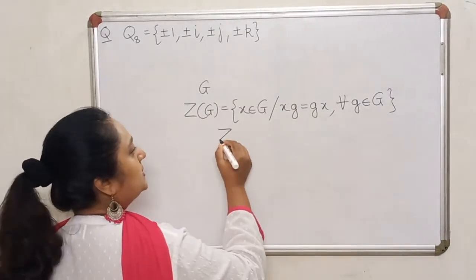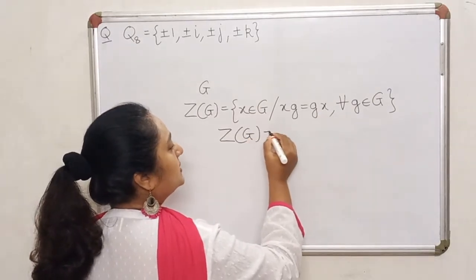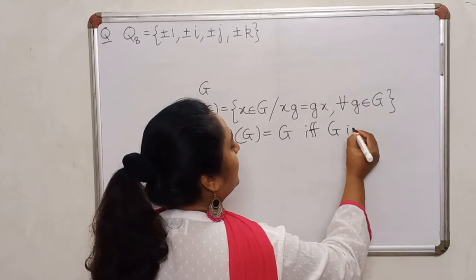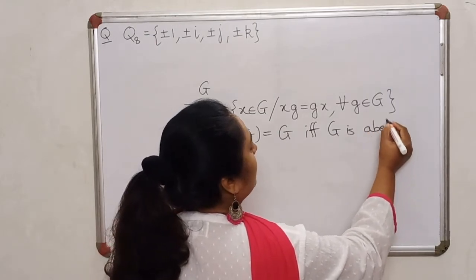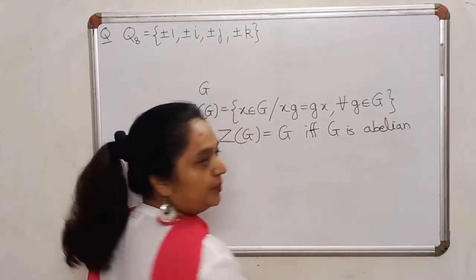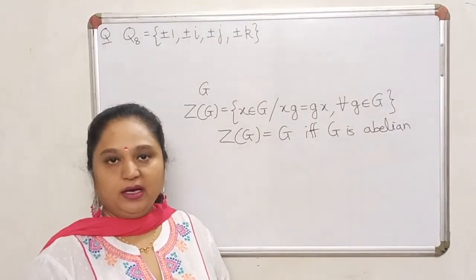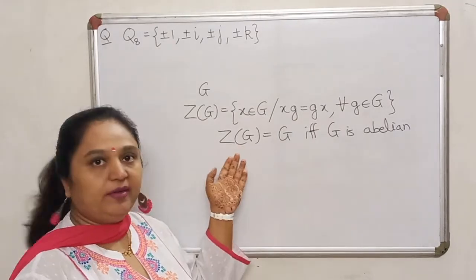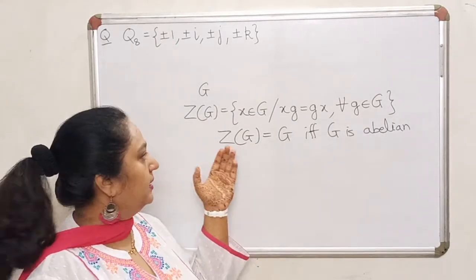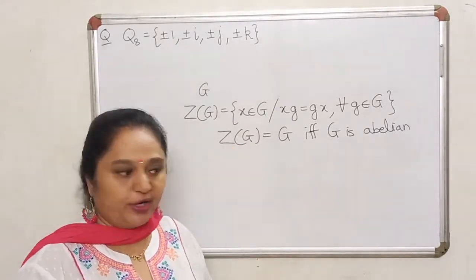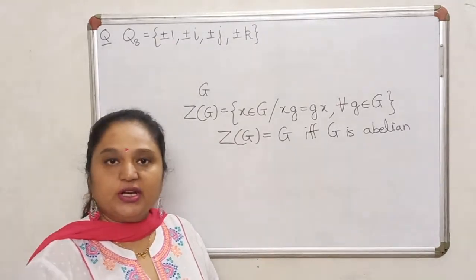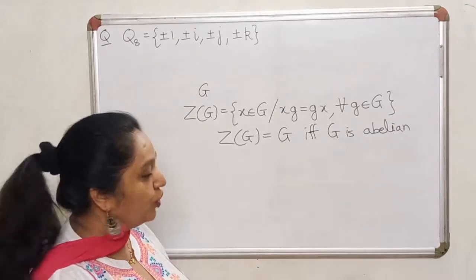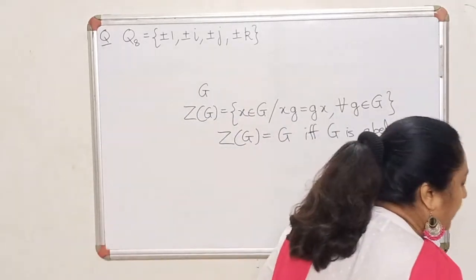In fact, towards the end, I also proved that the center will be equal to the whole group if and only if G is abelian. So for abelian groups, the center is not a very interesting concept, because if your group is abelian, you can straight away say the center is going to be the whole group. So naturally, it will make sense to find the center only for those groups which are non-abelian.